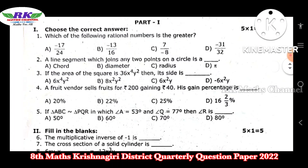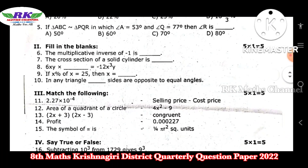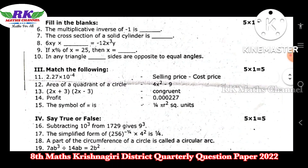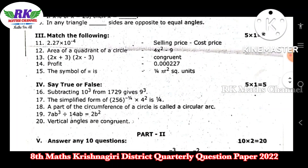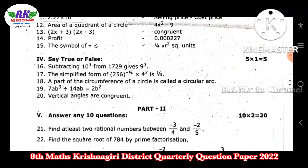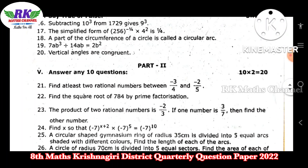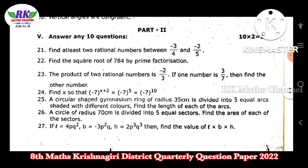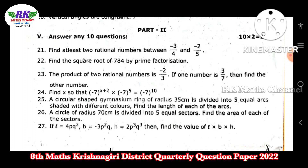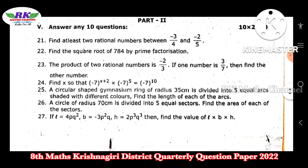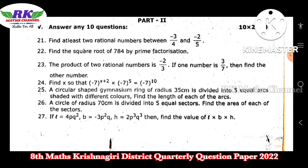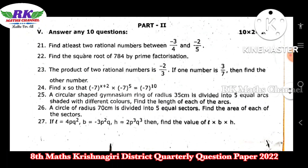Part 1 has the first section: choose the correct answer — 5 questions. Next, fill in the blanks — 5 questions. Next, match the following — 5. Next, true or false — totalling 20 marks. Part 2 has 10 questions for 20 marks. There are also important 2-mark and 5-mark questions.